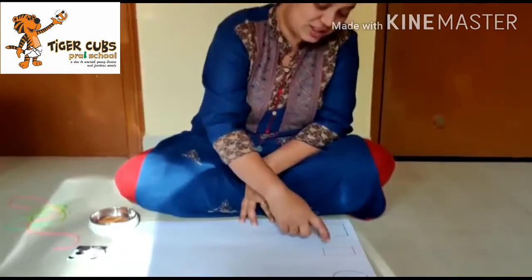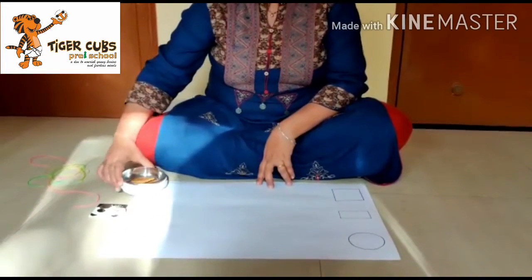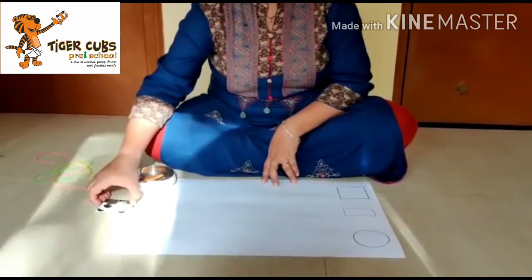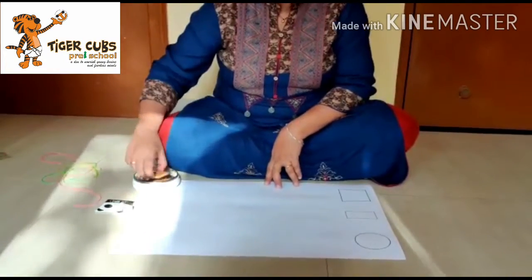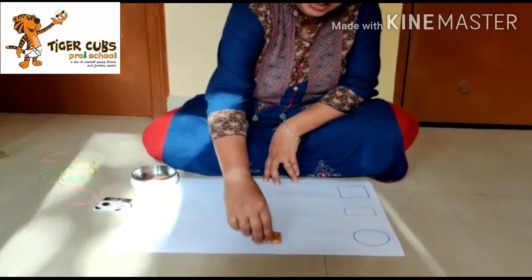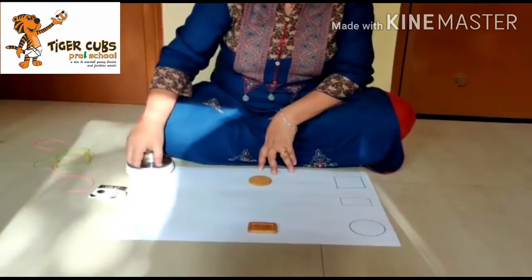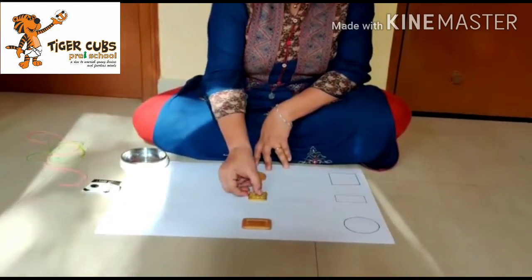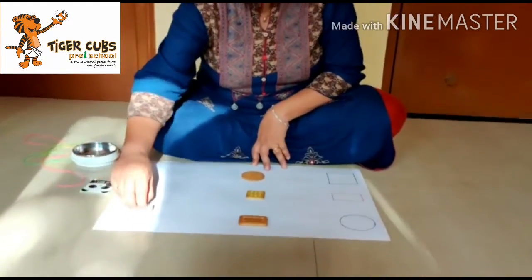Hello kids, today we are going to do an activity on shapes. I have brought three shapes here. Here are some biscuits and some objects. Now I have to arrange these biscuits here like this.